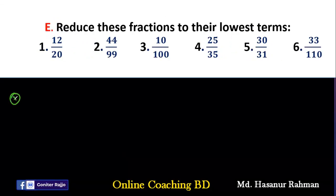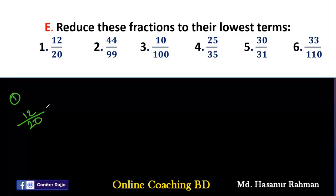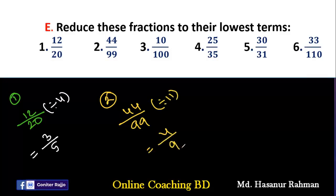Number E says: reduce these fractions to their lowest term. This is similar to Number C, but we use the HCF to divide. For number 1: 12/20 — the HCF of 12 and 20 is 4. Dividing: 12÷4=3 and 20÷4=5. So 3/5 is the lowest term of 12/20. Number 2: 44/99 — we divide by 11: 44÷11=4 and 99÷11=9. So 4/9 is the final answer.